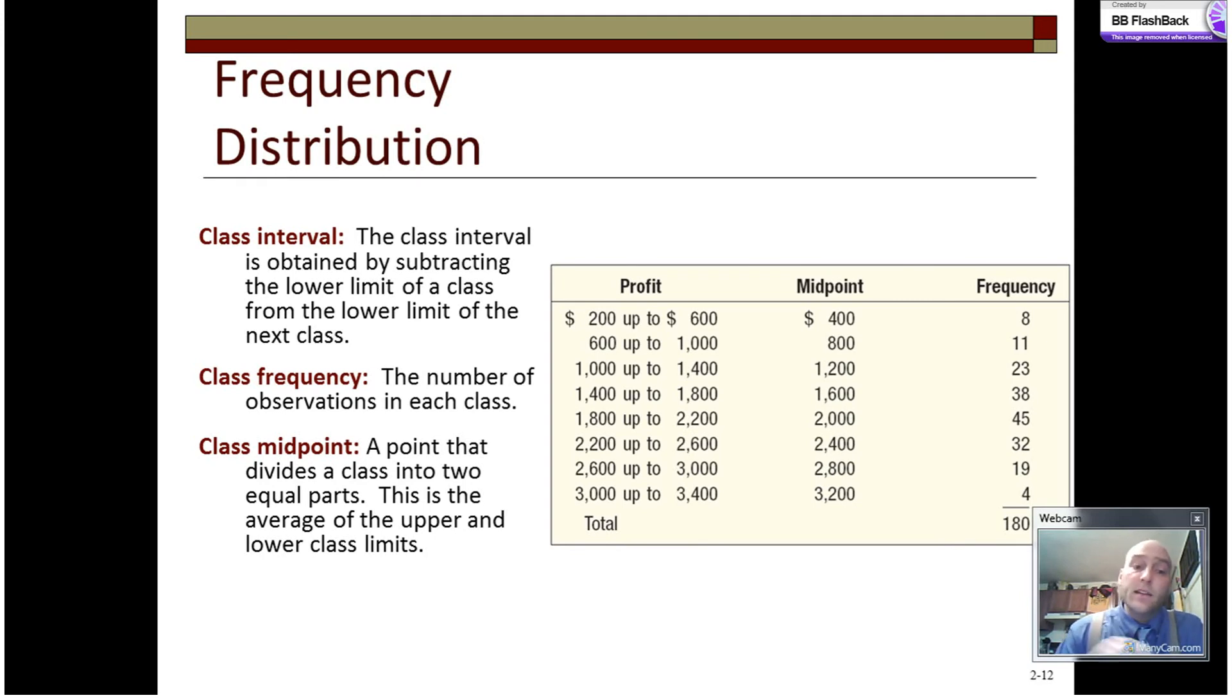Lastly, the class midpoint is the point that divides a class into two equal parts. It's the average of the upper and lower class limits. So if we add 200 to 600, we get 800. Divide that by 2, we get 400. That's the midpoint of all these. We'll see how that's used at the end in the frequency polygon.